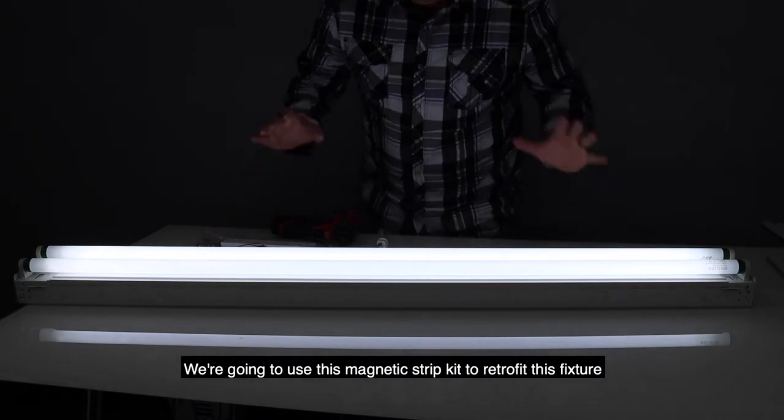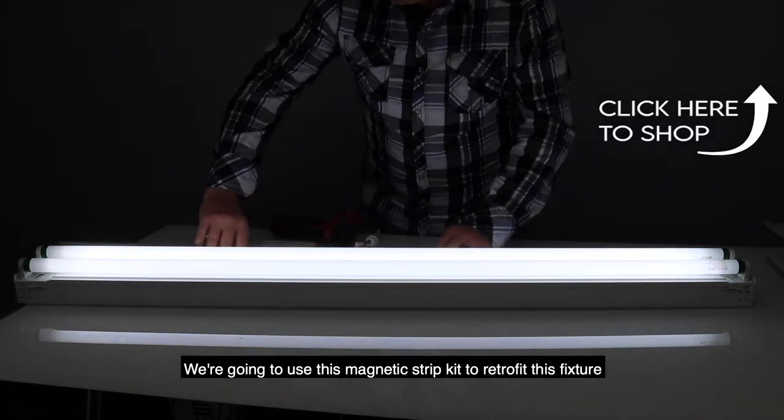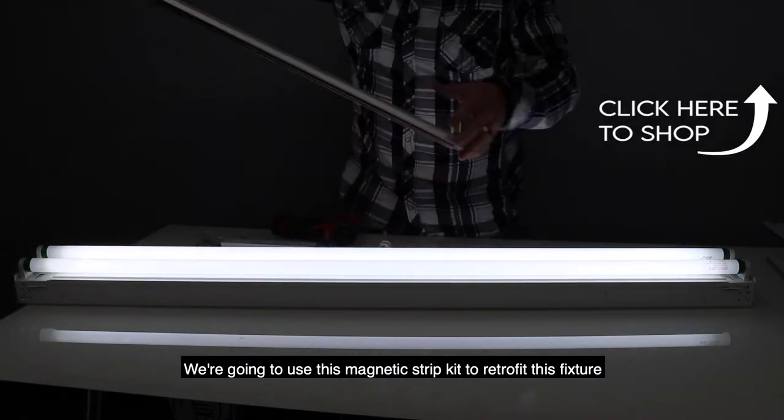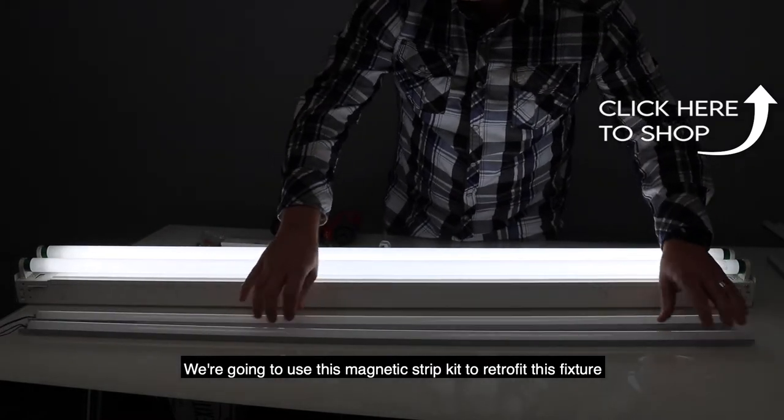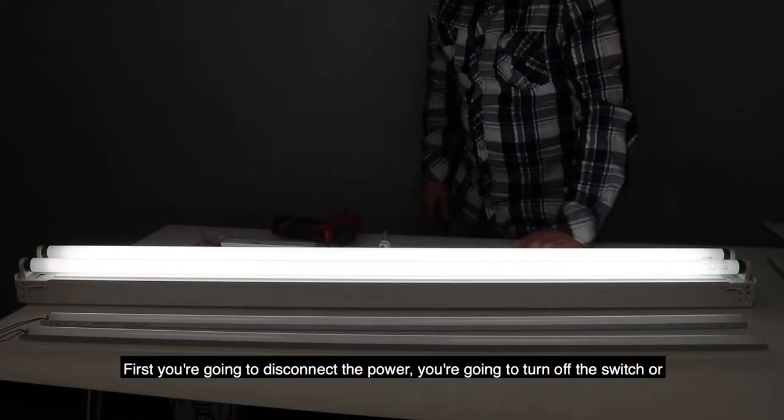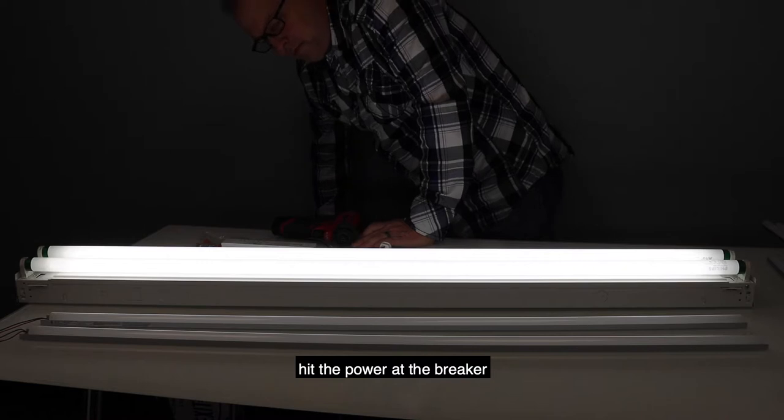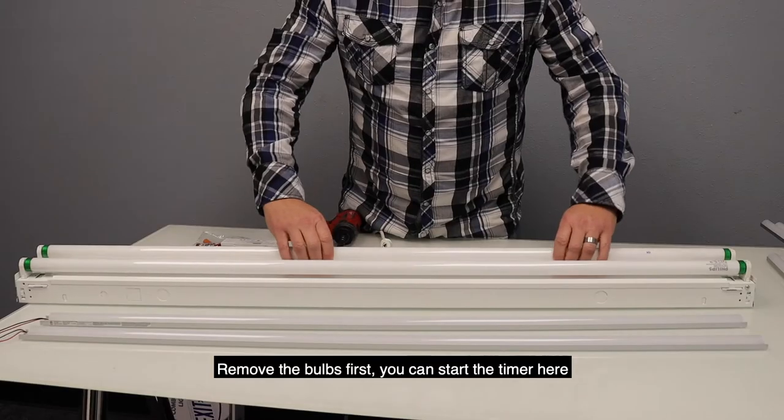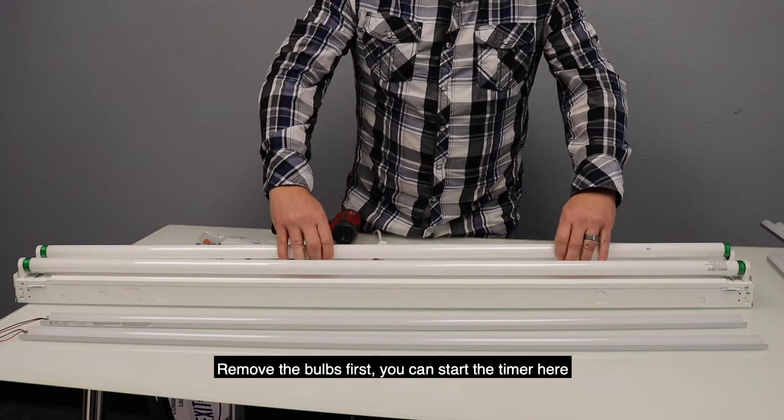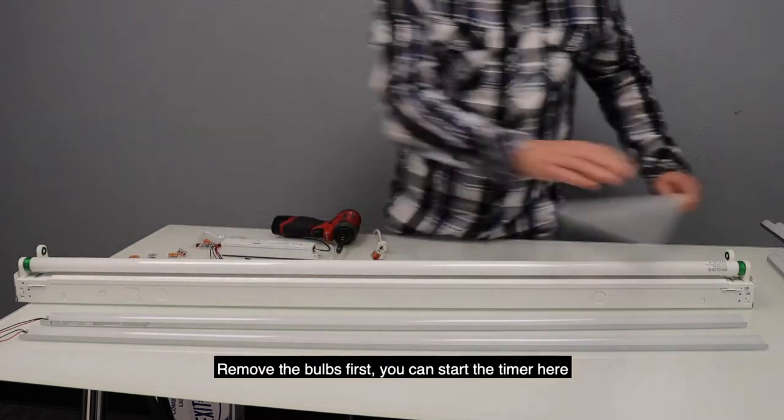So we're going to use this magnetic strip kit for retrofitting this fixture. First you're going to disconnect your power, you're going to turn off the switch or hit the power at the breaker. I'm going to remove your bulbs first. You can start the timer here.